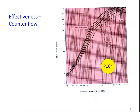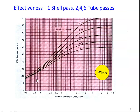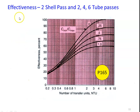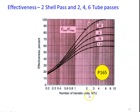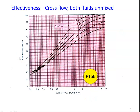The charts are defined similarly with x-axis NTU, y-axis effectiveness, and different lines for C minimum by C maximum ratio. Page 165 covers effectiveness for one shell and multiple tube passes — two, four, or six tube passes with one shell. Page 165 also has the chart for two shells and multiple tube passes. Page 166 covers the cross flow heat exchanger with both fluids unmixed.